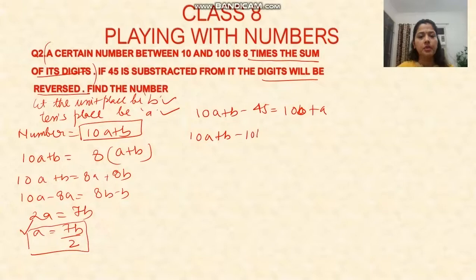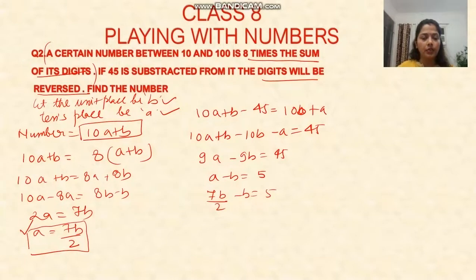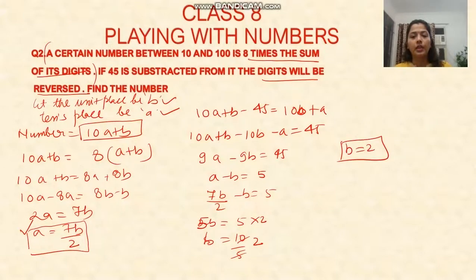Let's solve this: 10a plus b minus 10b minus a equals 45, so 9a minus 9b equals 45, therefore a minus b equals 5. Substituting a equals 7b/2, we get 7b/2 minus b equals 5, so 5b/2 equals 5, therefore b equals 2. If b equals 2, then a equals 7.